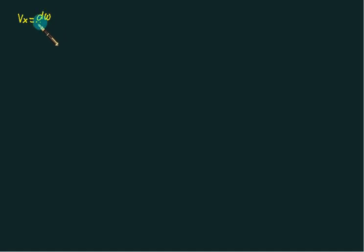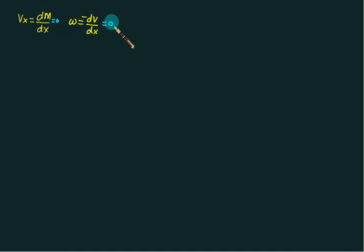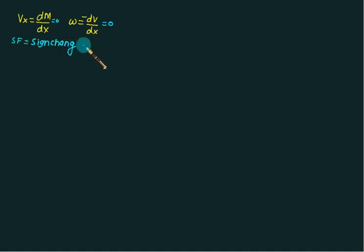In shear force and bending moment, the shear force at any section is the derivative of bending moment with respect to x, and the UDL load w is minus dV/dx. If this value is zero, it indicates a maxima. So what we conclude: when the shear force changes sign, the bending moment is either maximum or minimum. The same conclusion can be drawn for loading also.